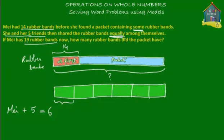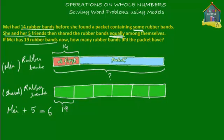It says that if May has 19 rubber bands now, so after the sharing, each child got 19 rubber bands. The first model shows the rubber bands before sharing — everything was owned by May. Then those rubber bands were shared among six people. Now each person got 19 rubber bands: this is May's share, then friend number two, friend number three, friend number four, friend number five, and friend number six. These six people divided the rubber bands equally, and each friend got 19 rubber bands.